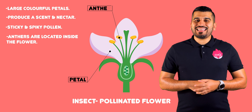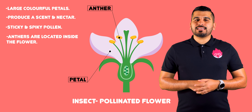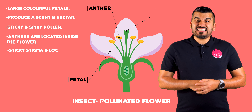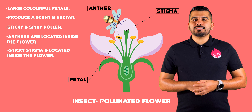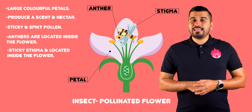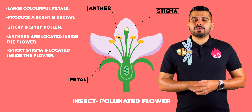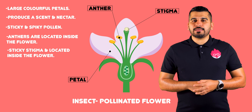The anthers are located inside the flower so the insects have to brush past them. They also have a sticky stigma to collect pollen grains, and it is located on the inside of the flower so insects have to brush past it.